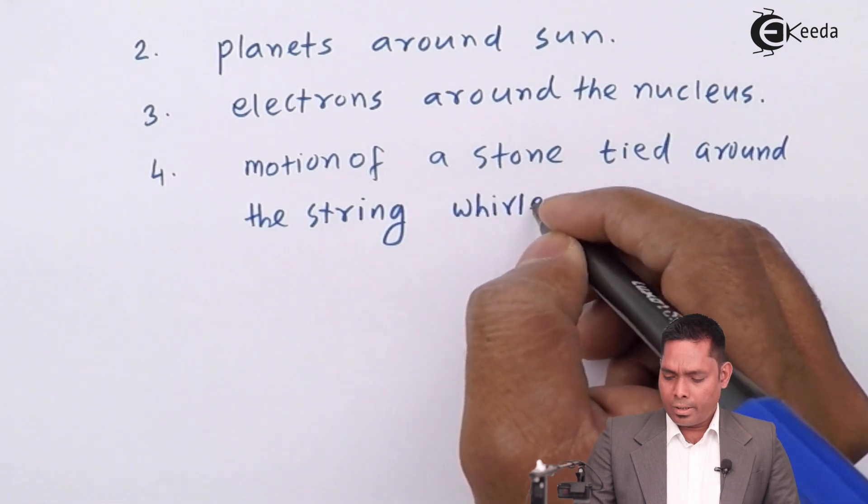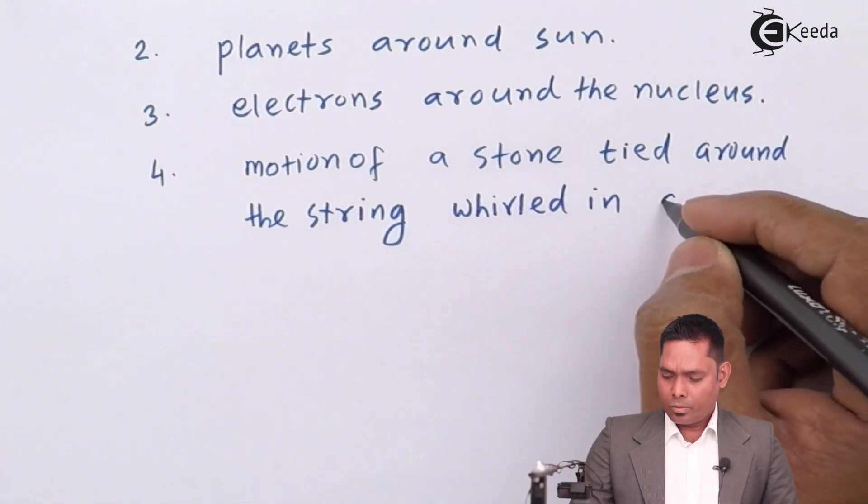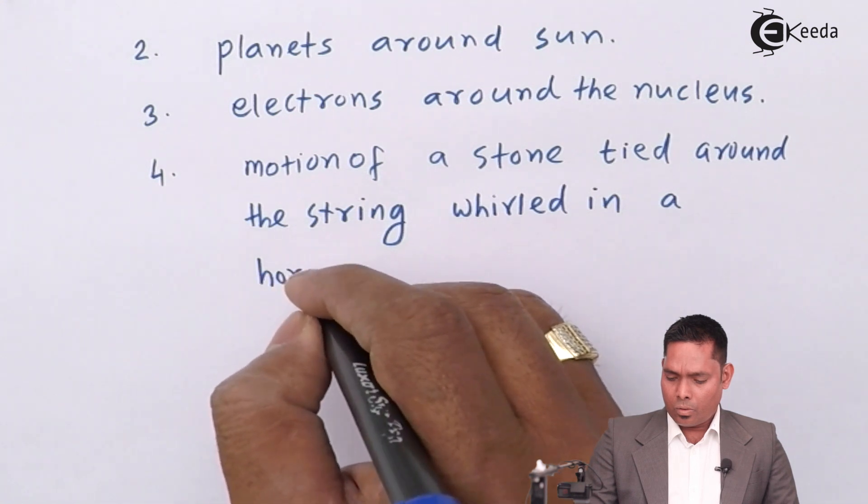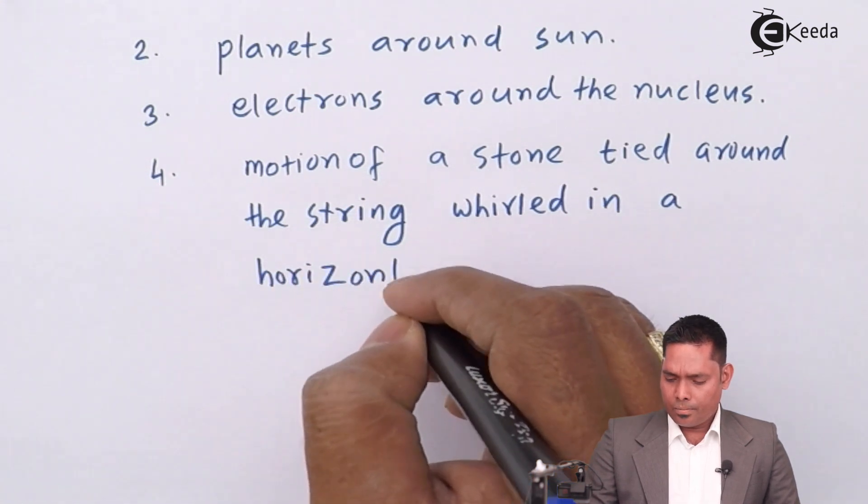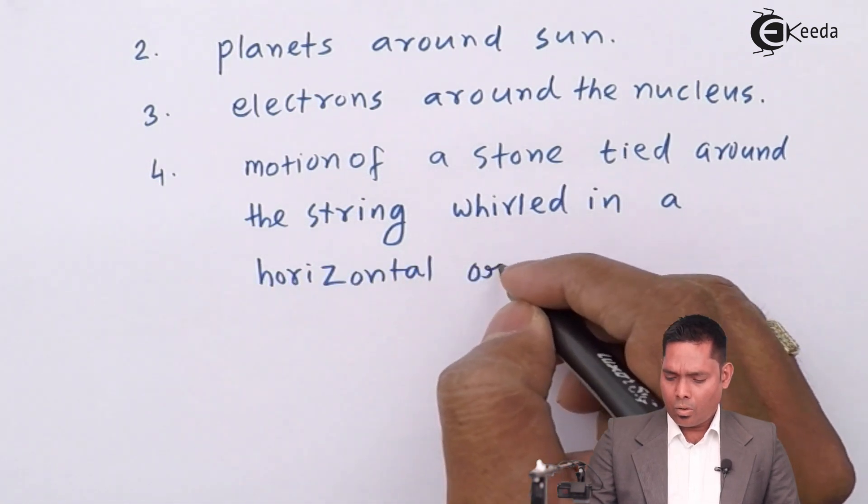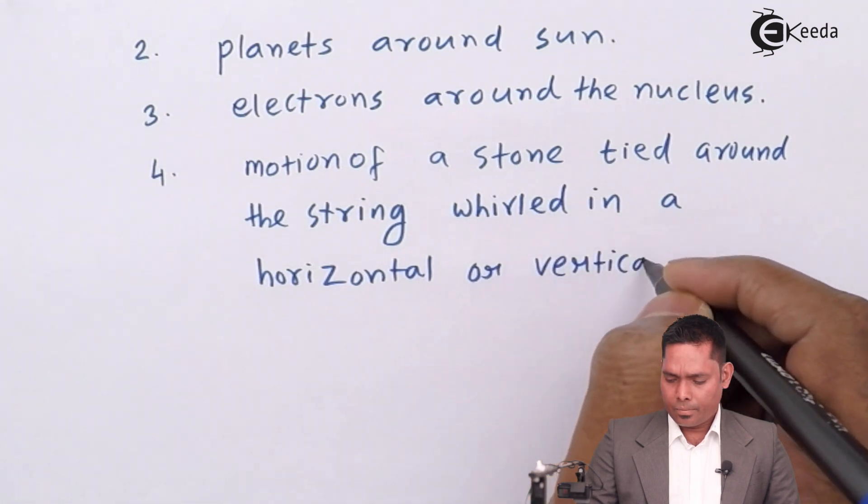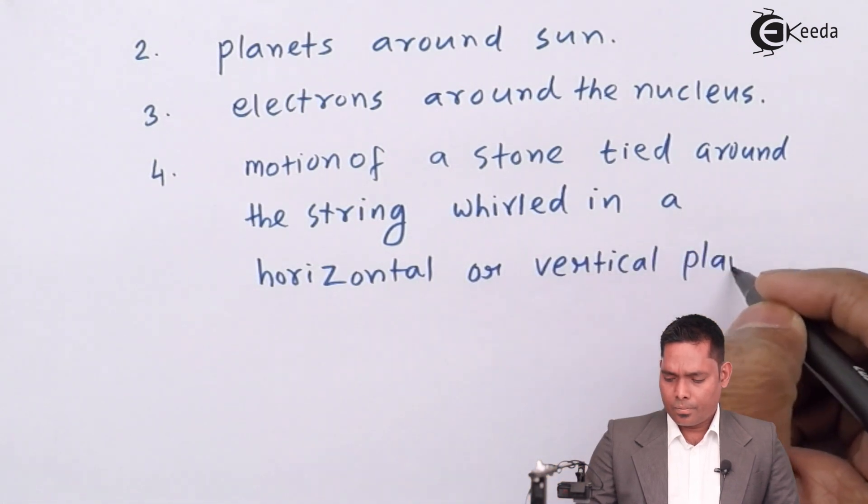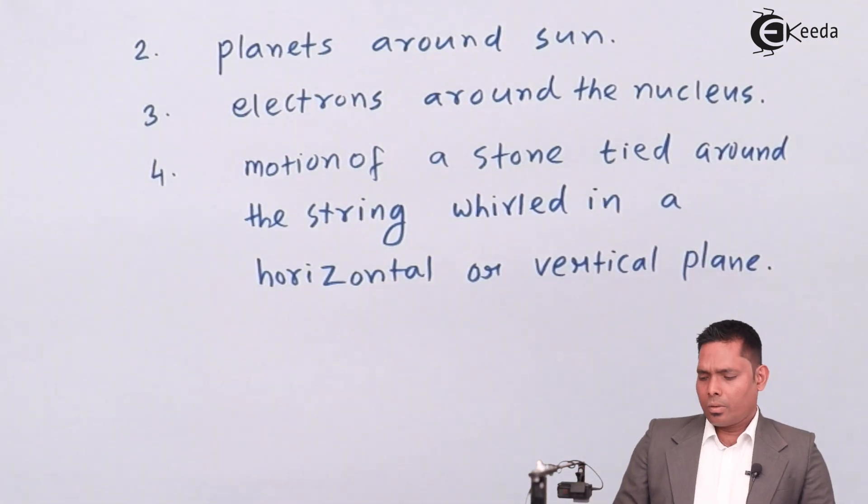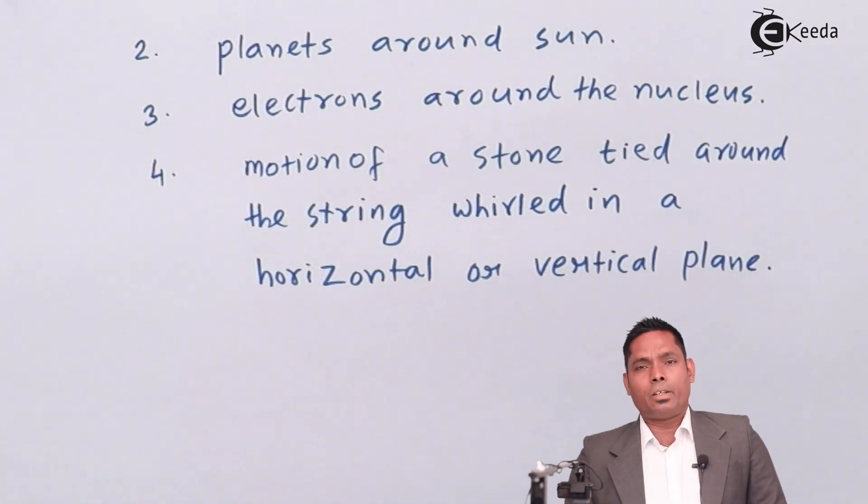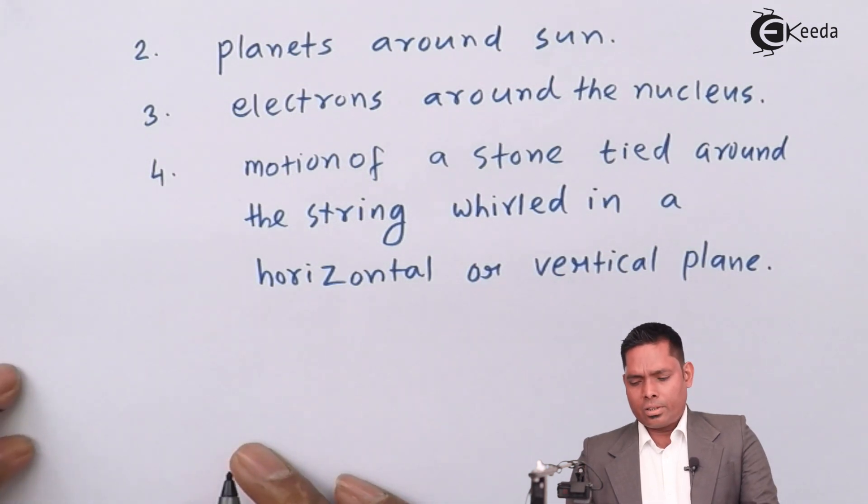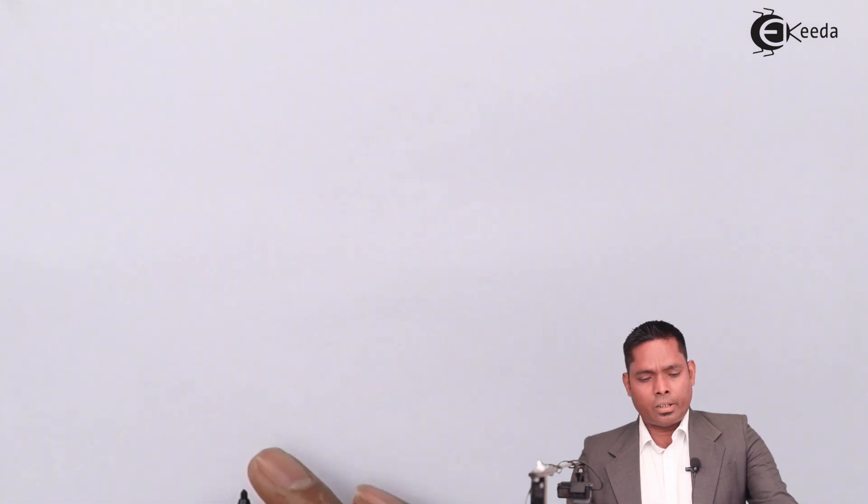You can swirl it in a horizontal or vertical plane. We have seen how the circular motion will be solved. Now, let us then go to the next part that we will discuss.